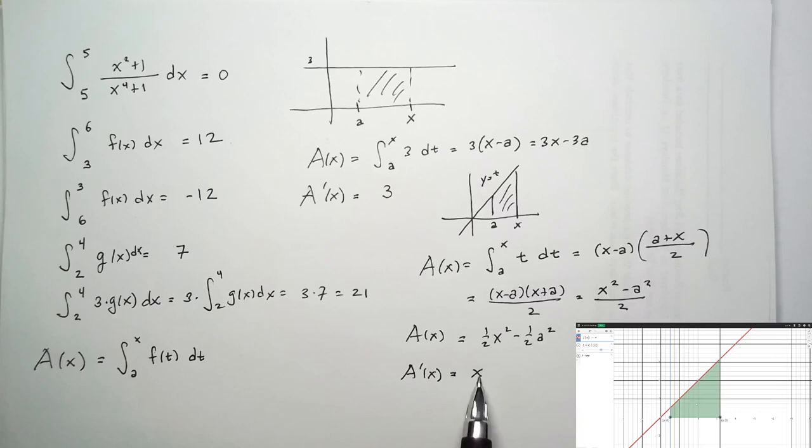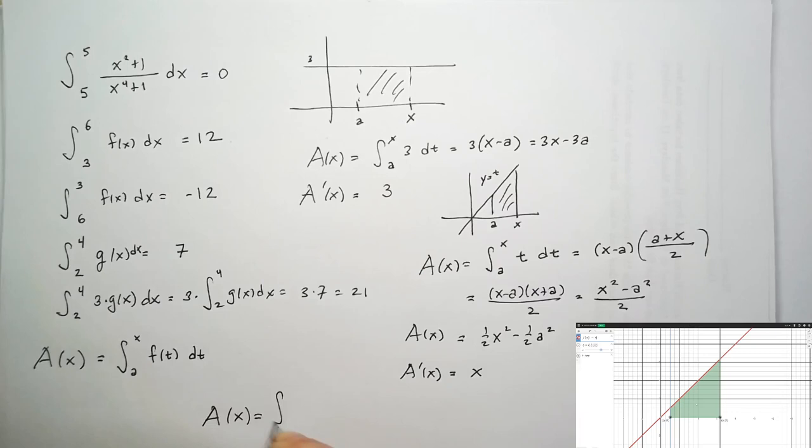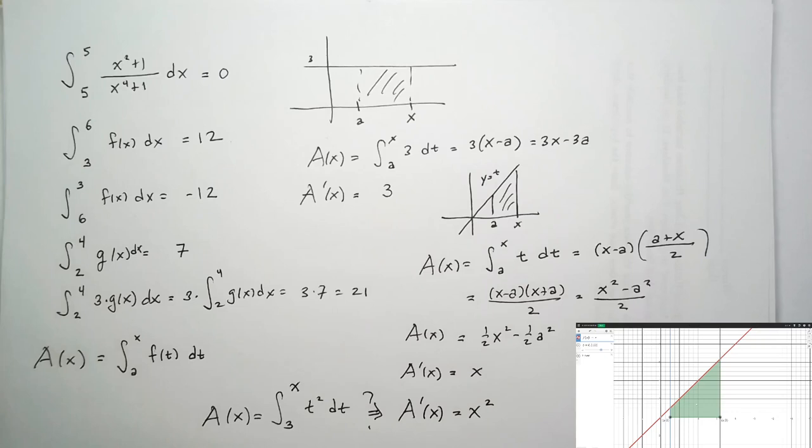This might not be coincidence. We might ask: is there always a relationship between the derivative of our area function and the integrand? In other words, if A of x equals the integral from 3 to x of t squared dt, does that mean A prime of x equals x squared? If so, we might be able to find functions capital A of x whose derivative is x squared, and use this to evaluate such integrals. We'll get to that soon.